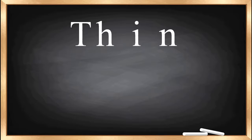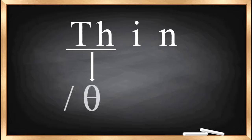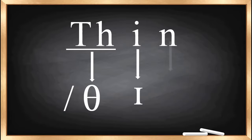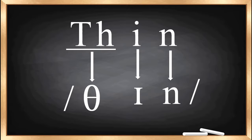The next word is 'thin'. Here TH produces only one sound: /θ/. This is the way you transcribe this sound /θ/, then I gives /ɪ/, and N gives /n/. So the transcription of 'thin' is /θɪn/. These are the ways we transcribe English words using vowel and consonant sounds.